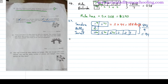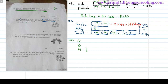Number 28. There are thrice as many boys as girls at a carnival, and the number of girls was thrice the number of adults. So the least number of people are the adults — we have more girls than adults and more boys than girls. G for girls, B for boys, A for adults. The number of girls is three times the amount of adults.